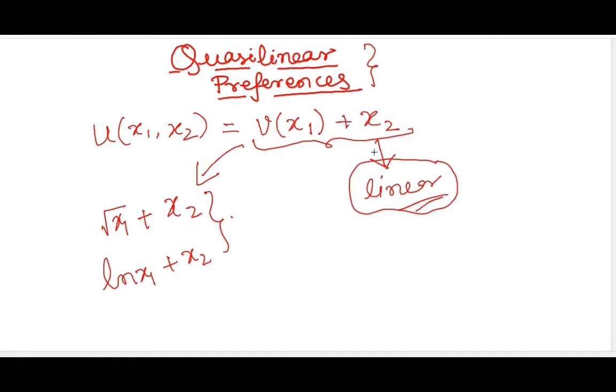Now there is a way to interpret this as well. Let's say label some IC, indifference curve, as 10. It means that I can just rearrange this and say x2 is equal to 10 minus v(x1).